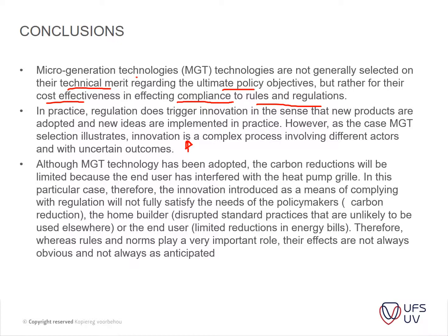Although micro-generation technologies have been adopted, the carbon reduction will be limited because the end user has interfered with the heat pumps. This is what typically happens — the community has to buy into it. Usually these energy-efficient heat pumps need more maintenance than general geysers used in standard buildings, and the end user bypassed them. Therefore, the innovation introduced as a means of complying with regulations will not fully satisfy the need of the policy maker. Whereas rules and norms play a very important role, the fixes are not always obvious and not always anticipated. You're not going to change the world through policy alone.